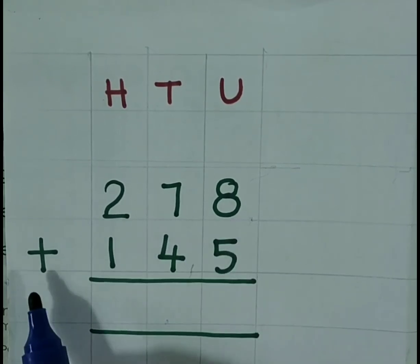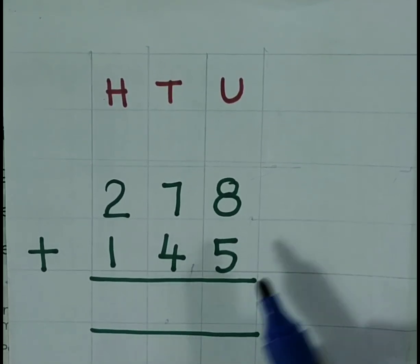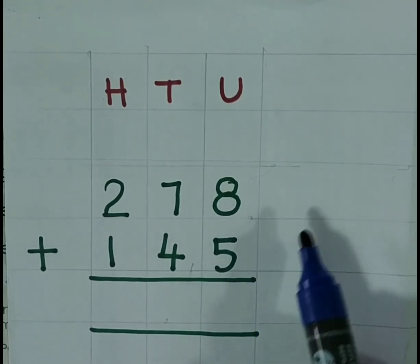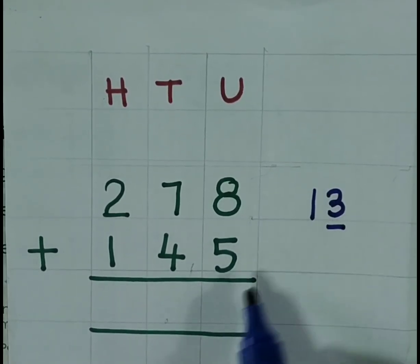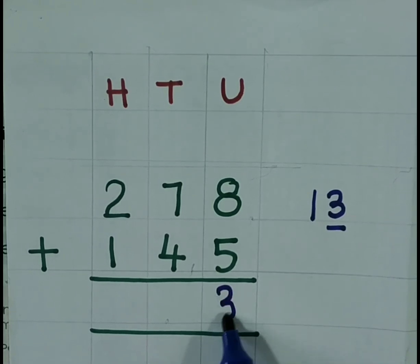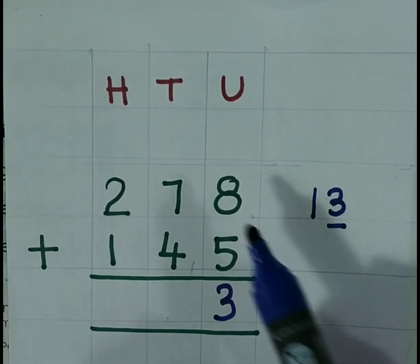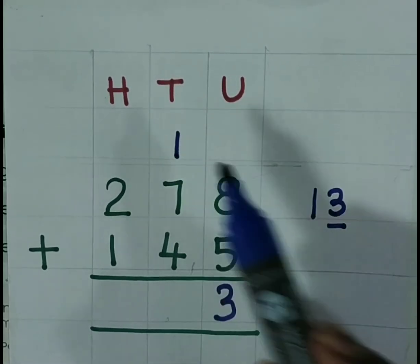278 plus 145. 8 plus 5 is 13 units. 3 you have to write at the unit place. 1 at the 10th place.